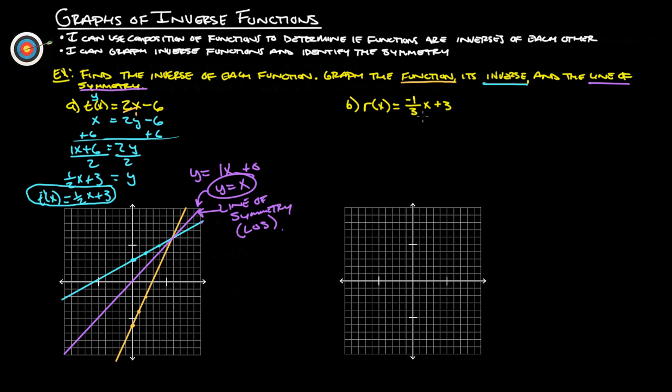All right, last one here, negative one-third x minus three, so maybe let's just graph this one first right off the bat. Plus three, and then it's negative one over three, so down one over three, down one over three, and so forth and so on. So we'll graph that, and we get something like that-ish.